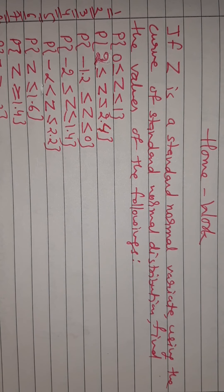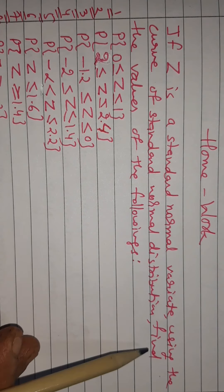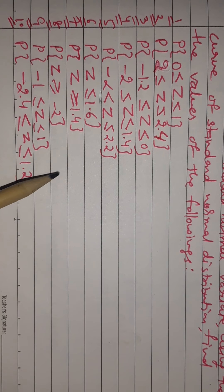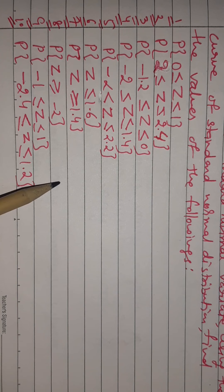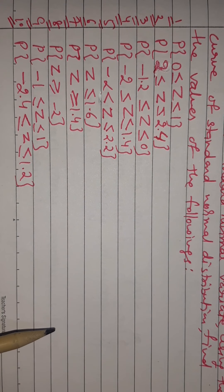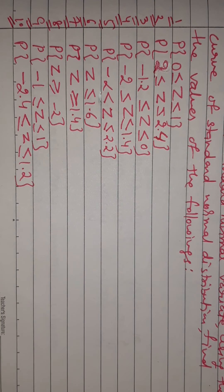Today's homework: if Z is a standard normal variate, using the curve of standard normal distribution, find the values of the following — 10 questions, find the values along with diagram. This is the end of today's session. See you in the next session. Thank you.